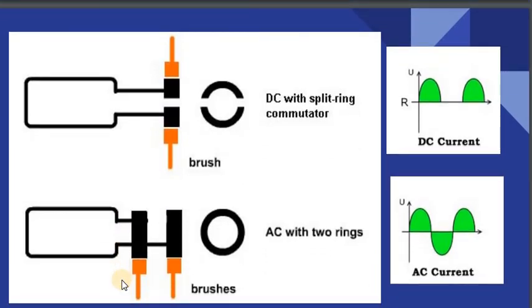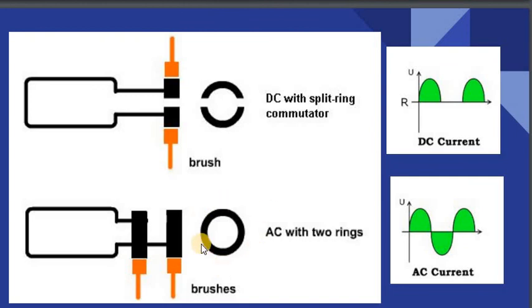If instead of slip rings you use split rings, the output will be DC current. In the case of slip rings, the output will be alternating current.